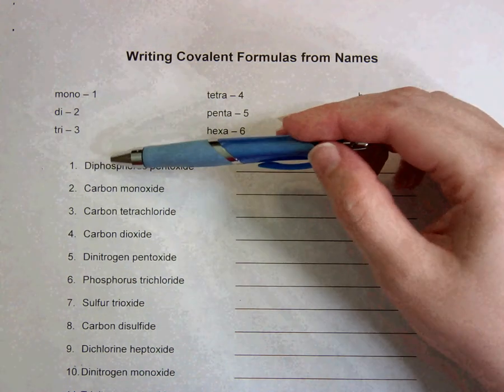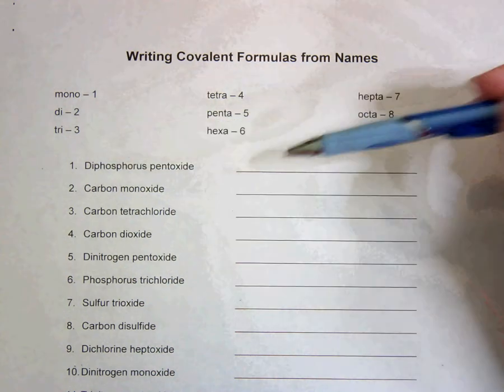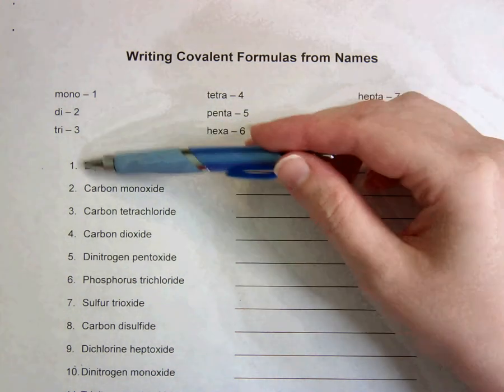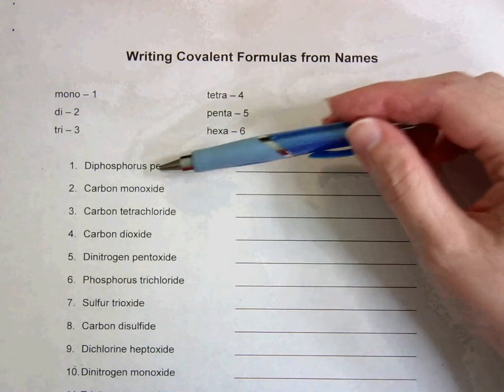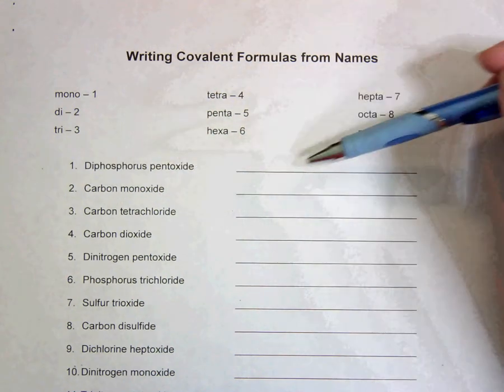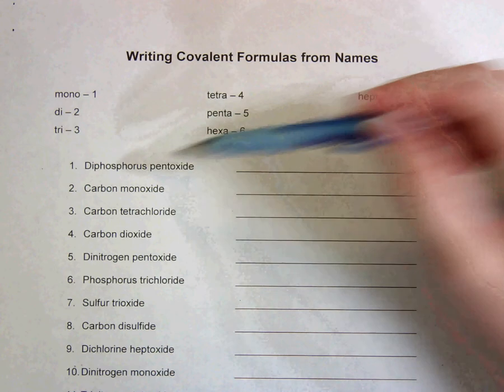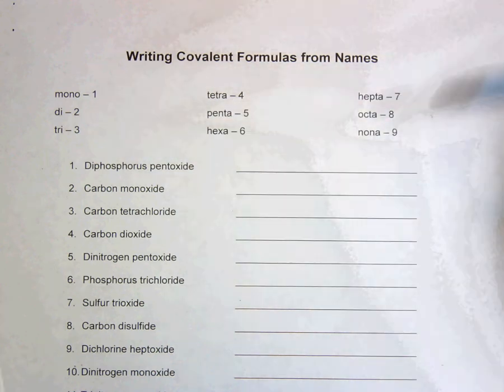So diphosphorus, find phosphorus on your periodic table. Write down its symbol, and the number that di means for its subscript. Pentoxide, oxide to remember is oxygen. Write down its symbol, and put the correct subscript from here.